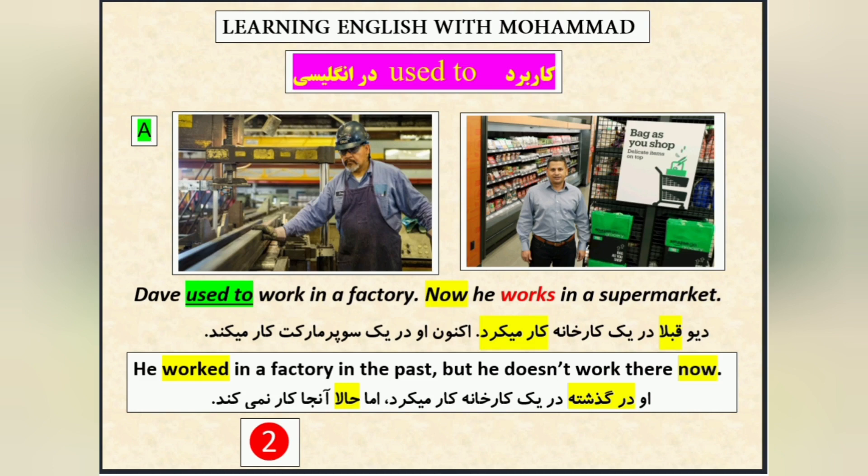Used to دلالت به گذشته داره. یعنی he worked in a factory in the past. اون در گذشته توی کارخونه کار می‌کرد. But he doesn't work there now. اما الان اونجا کار نمی‌کنه.